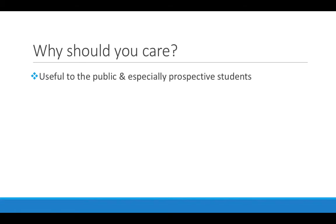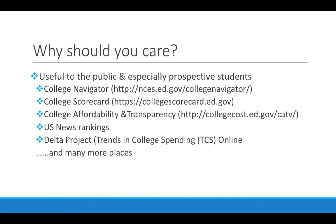Another reason why you should care about IPEDS is that the data are used in many ways by both the public and especially prospective students, even though in some cases they don't even realize what they're drawing from is IPEDS data. Listed on the screen are a number of different programs based on IPEDS data that help communicate to the public about colleges and universities in the United States. The College Navigator and College Scorecard are both Department of Education tools intended especially for prospective students to identify and compare institutions. The College Navigator is great for searching by geographic region, by public or private status, by cost, etc. The College Scorecard is also really helpful to directly compare different institutions to one another.